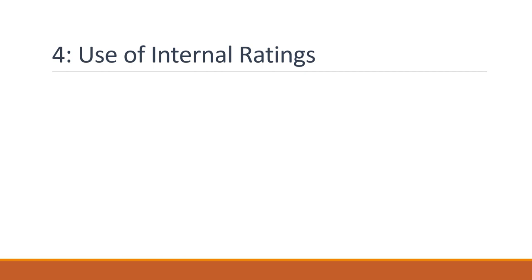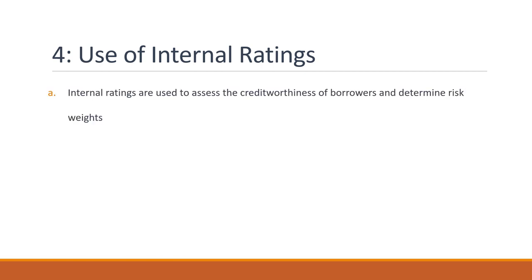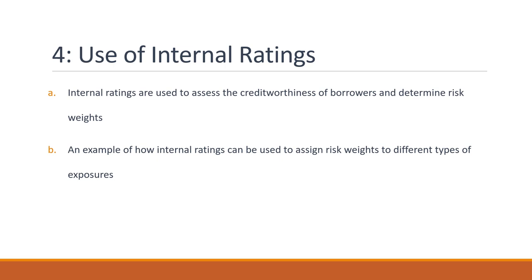Let's start by discussing the use of internal ratings. Internal ratings are used to assess the creditworthiness of borrowers and determine risk weights. Banks must develop and use a rating system to assign ratings to borrowers based on their creditworthiness. These ratings are then used to assign risk weights to different types of exposures. Let's say a bank has a corporate loan portfolio that includes loans to several companies. The bank assigns internal credit ratings to each borrower based on factors such as their financial strength, industry, and business model. The bank then uses these internal ratings to assign a risk weight to each loan, as per the IRB approach.